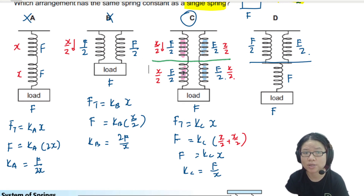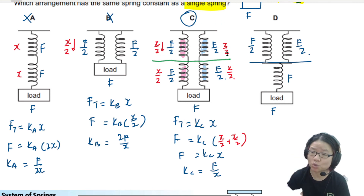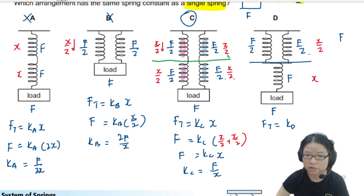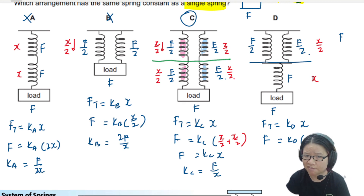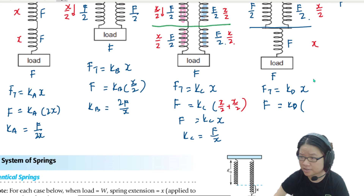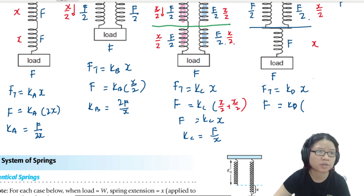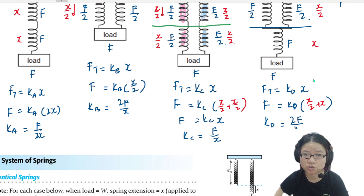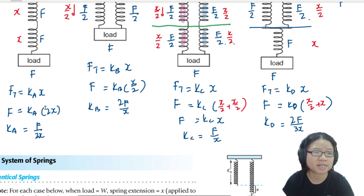For arrangement D, using a layer approach: each layer must support load F. The springs in each layer share the load, so F/2 and F/2 per layer. The bottom layer extends x/2, and the top layer extends x, giving a total extension of x/2 + x = 3x/2. So kd = F over (3x/2) = 2F over 3x, which is not F over x. Arrangement D is incorrect.